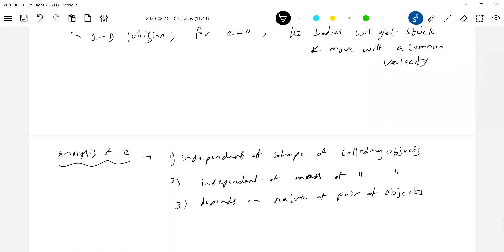We never define E for an object, for a pair of objects. Now suppose a wood collides with a wall, the wood and wall will have that E value as a pair. Then wood and glass, that pair will have a different value. Different pairs will have different values.